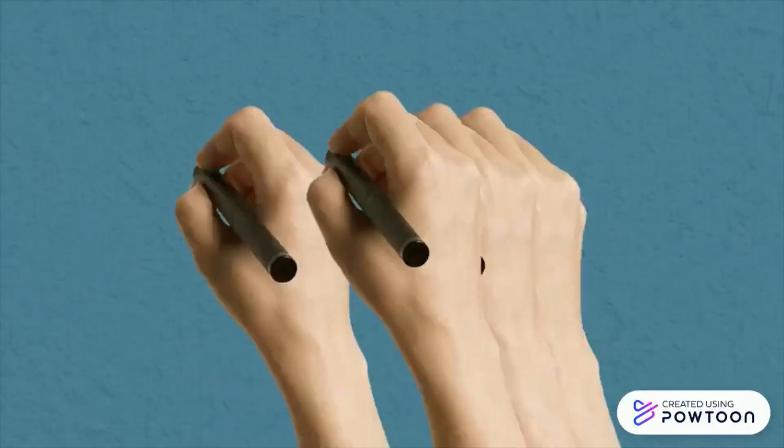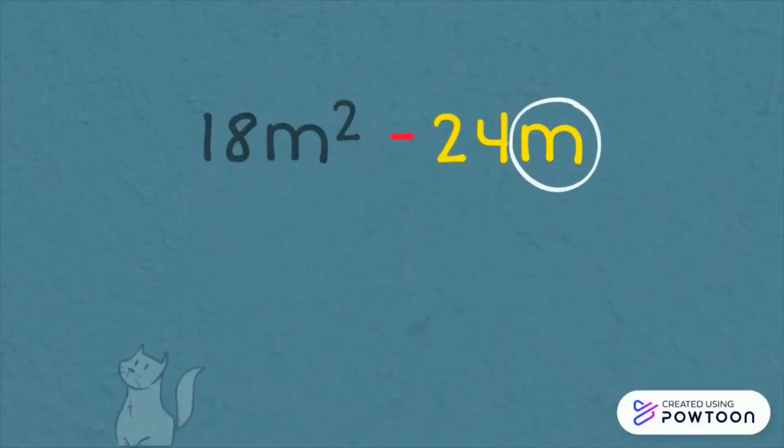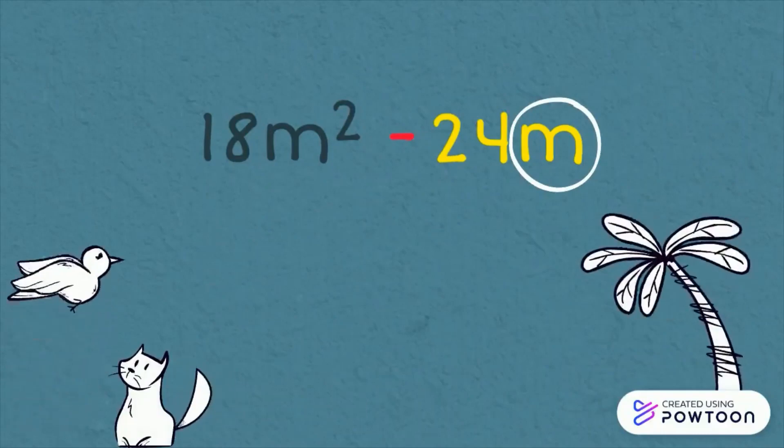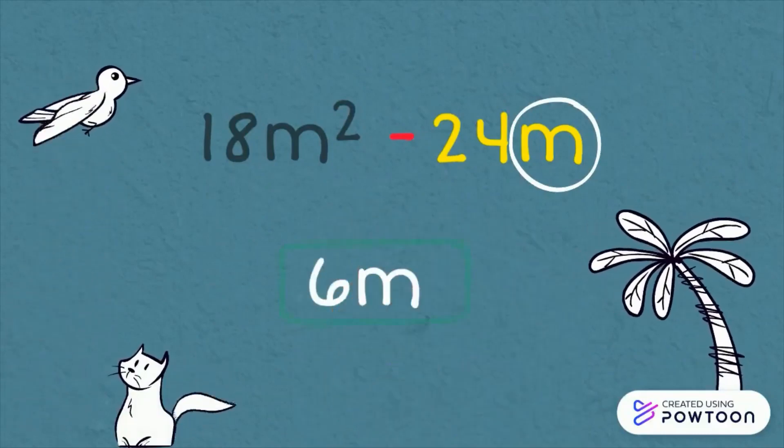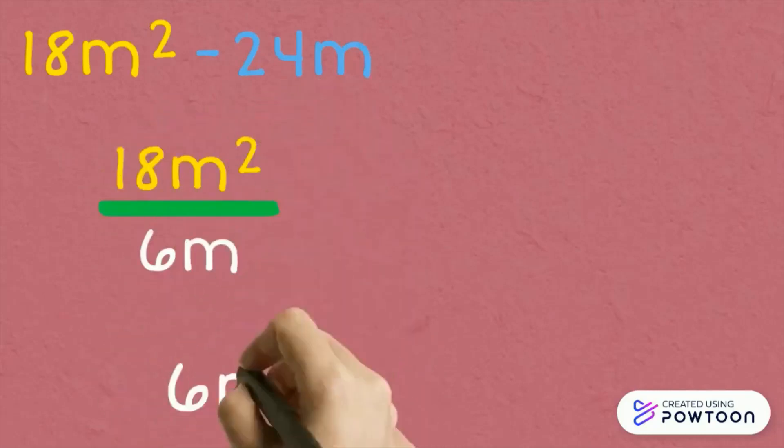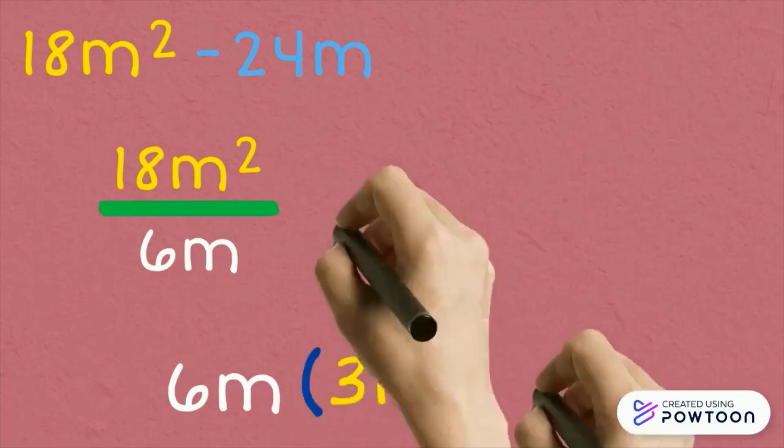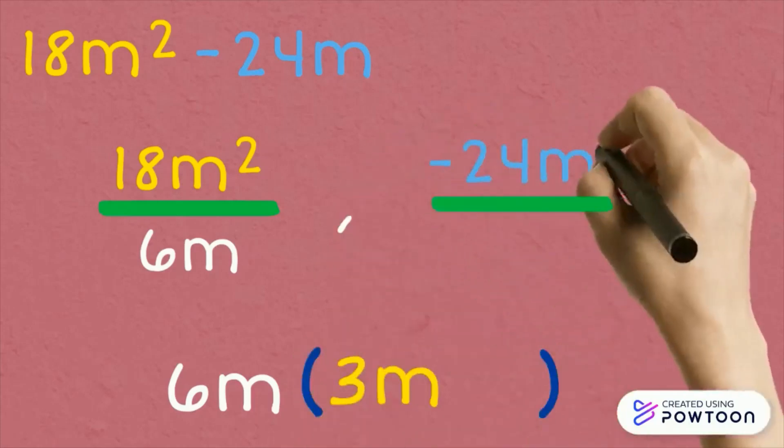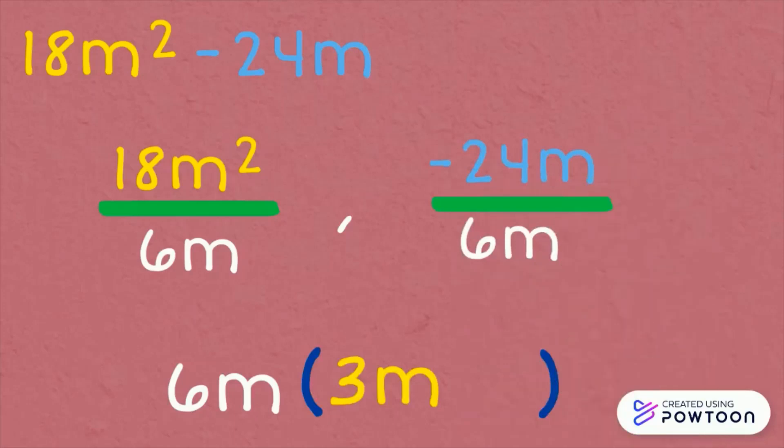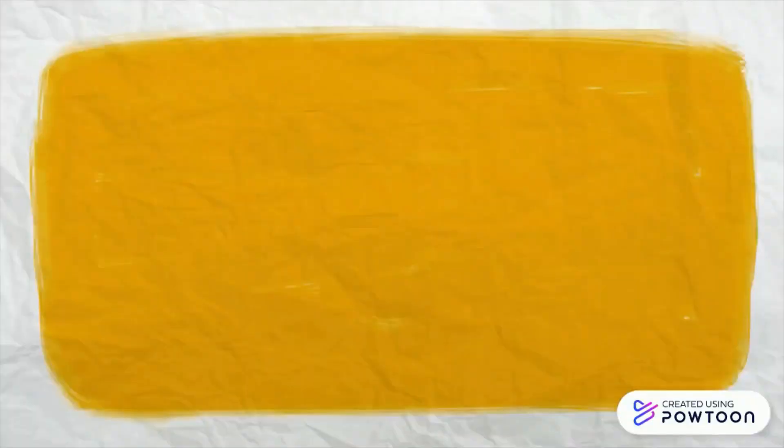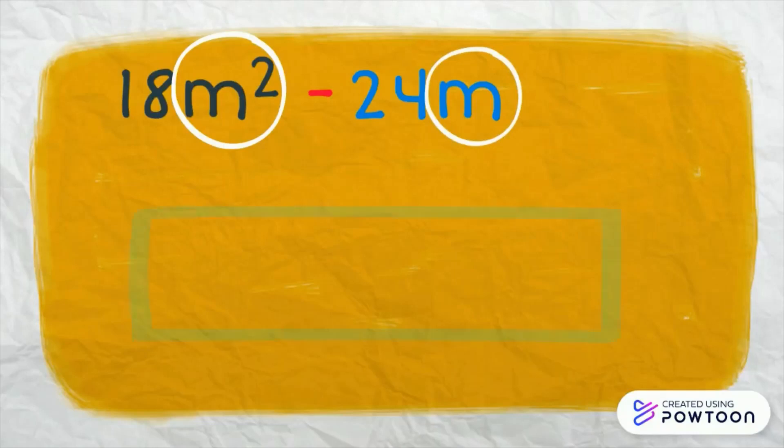In this case, we will choose m with an exponent of 1. Therefore, the common factor is 6m. Dividing the first term 18m squared by the common factor 6m, the other factor is 3m. And dividing negative 24m by 6m, the result is negative 4. Remember that we do subtract the exponents of the same variables when we divide.